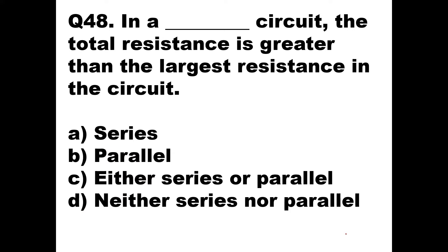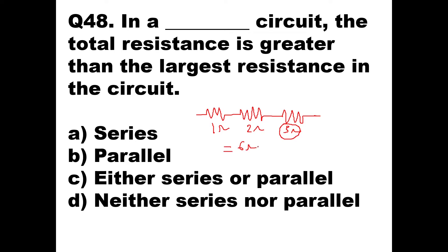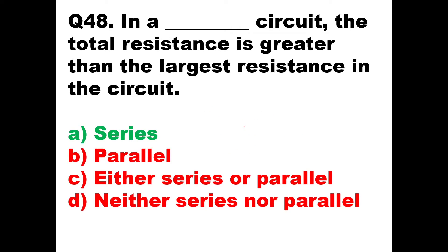Question 48: In a dash circuit, the total resistance is greater than the largest resistance in the circuit. Taking a series combination example with 1 ohm, 2 ohm, and 3 ohm resistors — the largest resistance is 3 ohm, but the equivalent resistance is 1+2+3 = 6 ohm, which is greater than the largest. This happens in a series combination, so the answer is A — series.